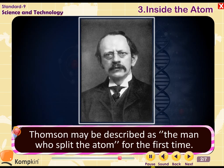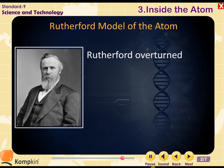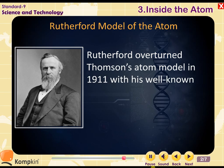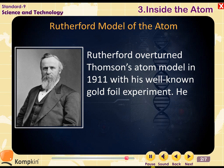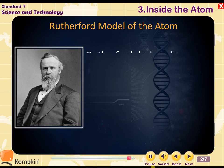In Thomson's atomic model, electrons are embedded in a positively charged pudding forming a positive sphere. Thomson may be described as the man who split the atom for the first time. Rutherford then overturned Thomson's atom model in 1911 with his well-known gold foil experiment.